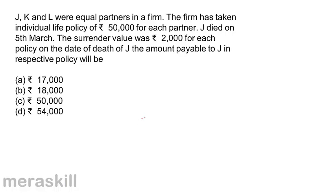Let us take one example. J, K and L were equal partners in a firm. The firm has taken individual life policies of Rs 50,000 for each of the partners. J died on 5th March. The surrender value was 2,000 for each policy on the date of the death of J.